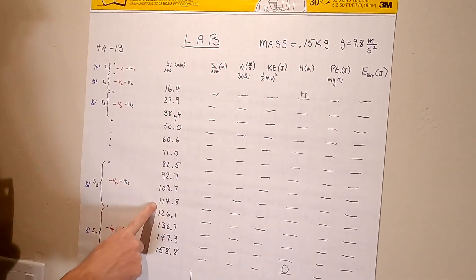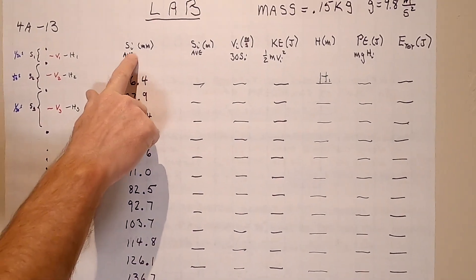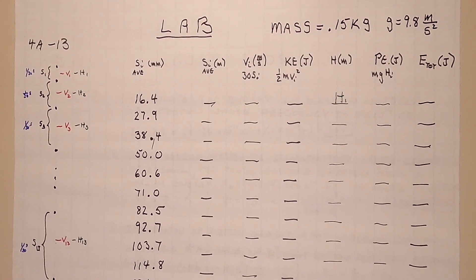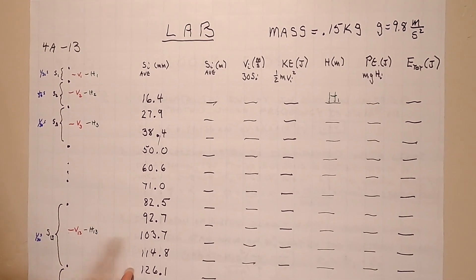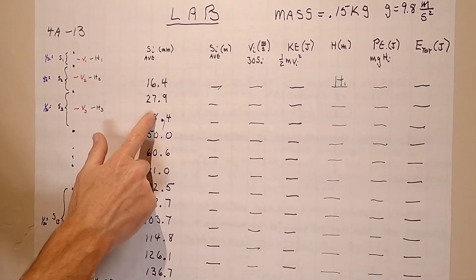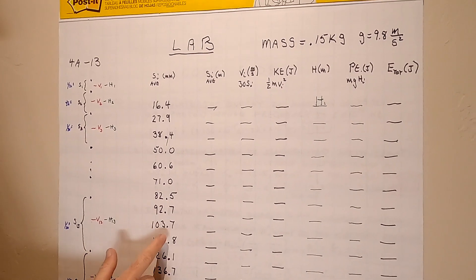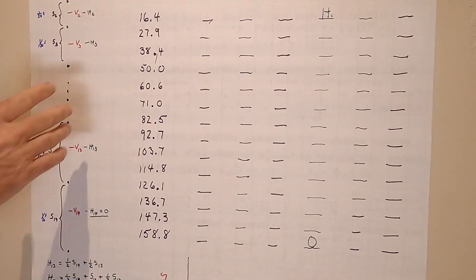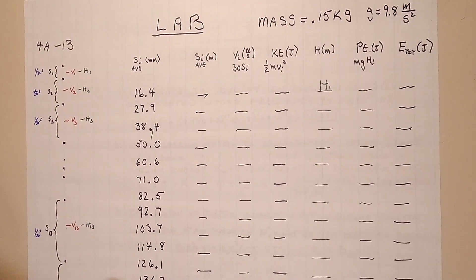So here I'm going to assume that this is what everyone's s sub i average was in millimeters right there. And yours was probably very similar to this, probably very close. And I think there's one, two, three, four, five, six, seven, eight, nine, ten, eleven, twelve, thirteen - there's fourteen of them. Okay, so this is what we want to use right here.